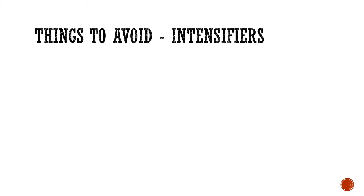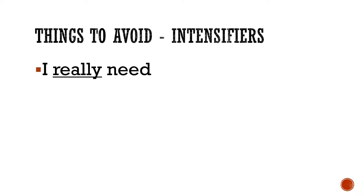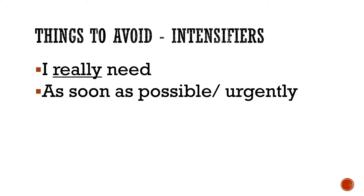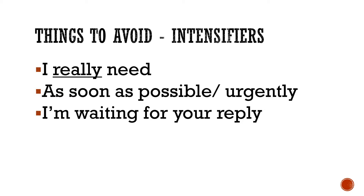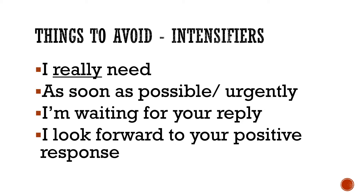Intensifiers are the opposite of downtoners. A downtoner softens the request, whereas an intensifier makes the request appear bigger — they add pressure and can be seen as pushy or coercive. For example: 'I really need this.' You can intensify time by saying 'I need it now,' 'I need it as soon as possible,' or 'urgently.' You can also appear pushy by saying 'I'm waiting for your reply,' or by expecting a positive response. So these are intensifiers.